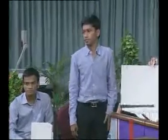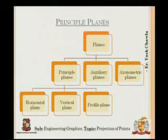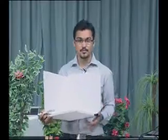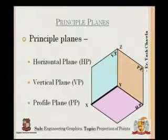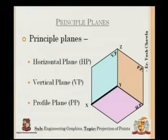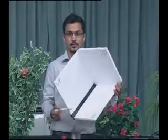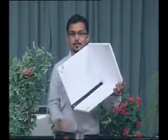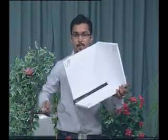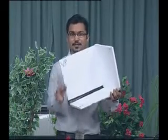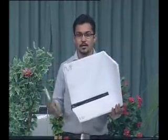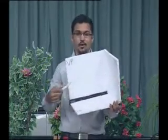As Hardik explained, we have the horizontal plane — on the slide you can see it written as VP, PP, and HP, that is vertical plane, profile plane, and horizontal plane. In an isometric view, the horizontal plane is parallel to the ground, the vertical plane is parallel to the wall, and the profile plane is perpendicular to both. Each of these names has a specific purpose.